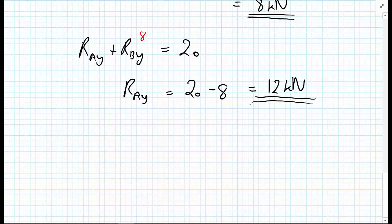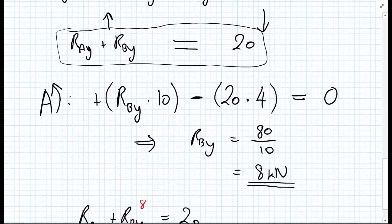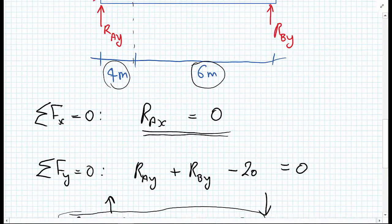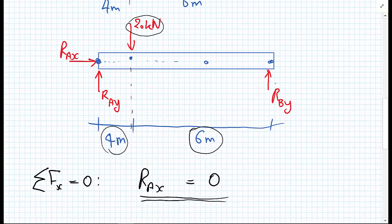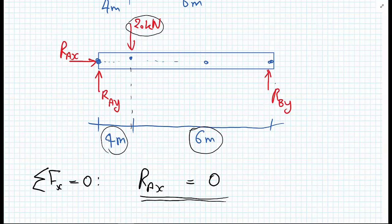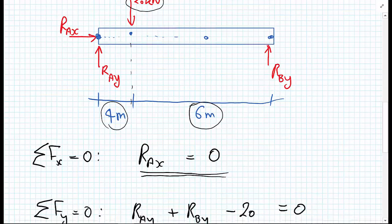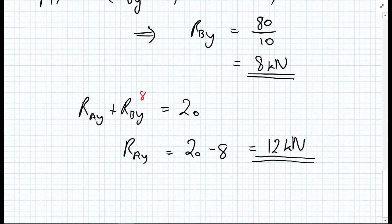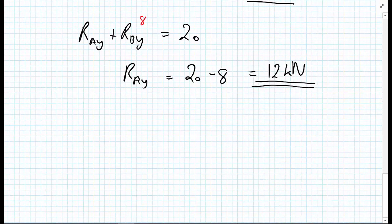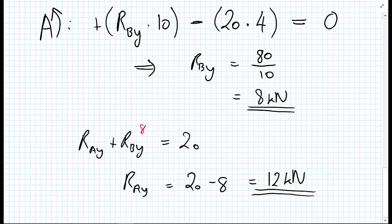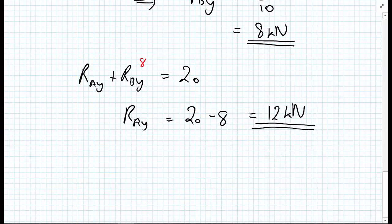And you could find another equation of equilibrium. Maybe you could take moments about the point B now, set up another equilibrium equation, and do a check that the results you've got for R A Y is correct. And that's always worth doing. Most problems in statics, you can always find a checking mechanism for your answers. Now, one last thing before I finish this particular video is in taking moments.